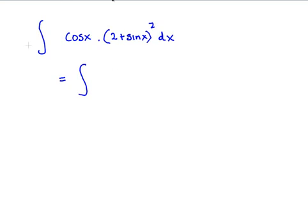Remember we let u equals 2 plus sin(x), and we found that du equals cos(x) dx. That means we can rewrite our expression as u squared times du.